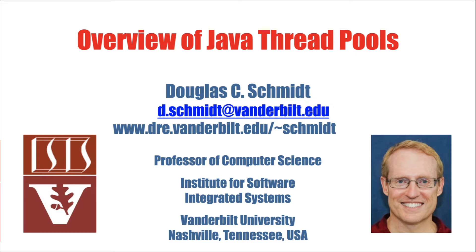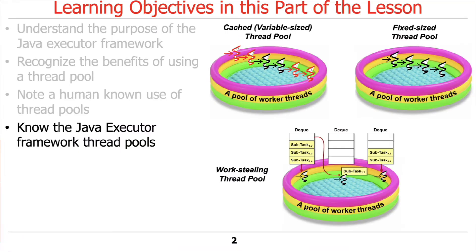The next topic will provide an overview of Java thread pools. We've talked about what a thread pool is in general, and now we're going to look at some of the thread pools that come out of the box in Java. We'll look at three of them: cached thread pools, fixed-sized thread pools, and so-called work-stealing pools.